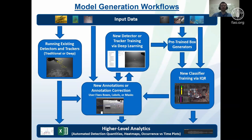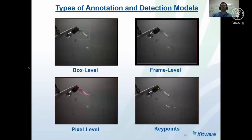The more traditional workflow has the user starting with raw data, doing a lot of manual annotation, then training a model. The second workflow is when you already have an existing model more similar to what you're trying to do — either from someone else's work or a first-pass model — where it might be more helpful to run the existing model and correct the annotations rather than doing them from scratch. The last workflow involves low-shot learning and video search to rapidly generate a model. There are different types of annotations the annotator interfaces support: box level, pixel level, frame level, and key points.